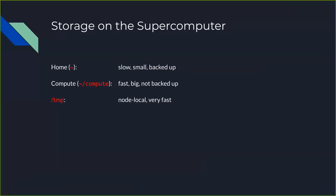We have essentially three storage systems on the supercomputer. Your home directory is where you land when you SSH in — it's small and not very performant, but it is backed up. We recommend putting data needed for papers, important results, and your software itself in your home directory. The compute directory is much bigger and faster but isn't backed up. Do most of your computing there, then move important results back to your home directory — you'd be surprised how often things are accidentally deleted and we need to restore from backup.